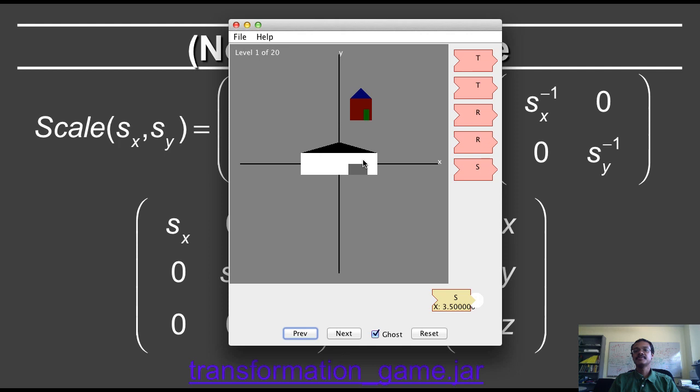and note now that the house has become long and thin. So scaling can work non-uniformly, it can be different in the x direction from the y direction. I can also put in a scale now along the y direction, and now I've just made my house bigger.